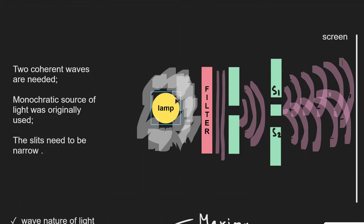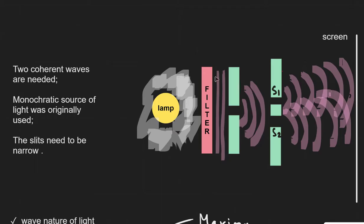We have a lamp across here and that releases some light. That light is going to go through a filter. This ensures that we have a monochromatic source of light. A monochromatic source simply means that it's composed of light of a single wavelength.